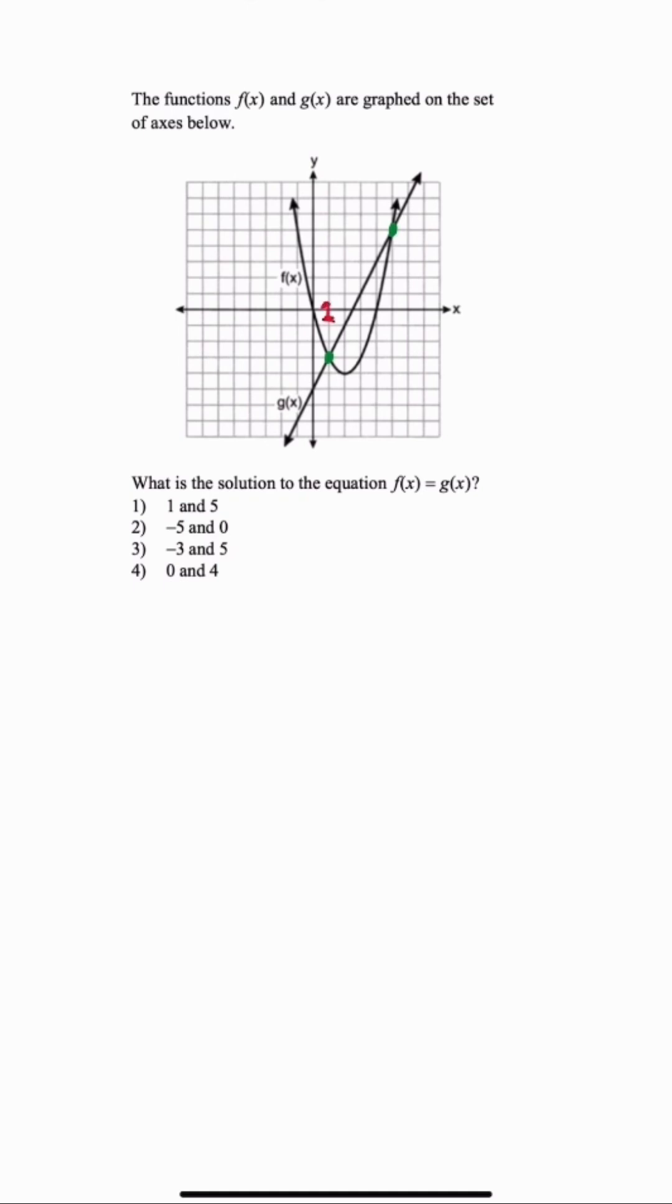So the first one is when x is 1, and the second point of intersection is when x is 5. When we look at our answer choices, this is going to be answer choice 1.